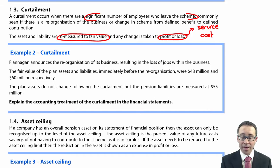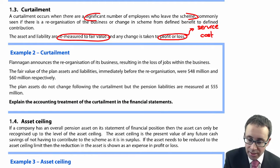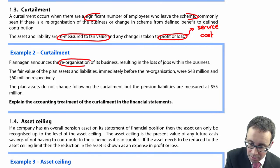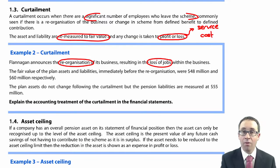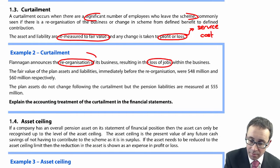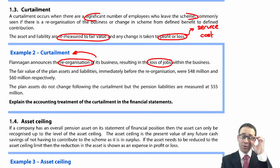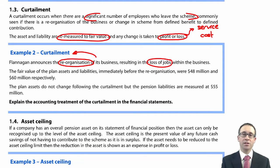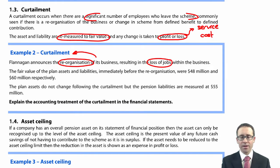It says here: explain the accounting treatment of the curtailment in the financial statements. Flanagan announces the reorganisation of its business, resulting in the loss of jobs. So those two things combined mean that you have a curtailment. If that's the case, you need to re-measure the assets and liabilities to fair value, and any changes go immediately to profit or loss, like a service cost. The fair value of the plan assets and liabilities immediately before the reorganisation were 48 and 60 million respectively — so net liabilities of 12 million.